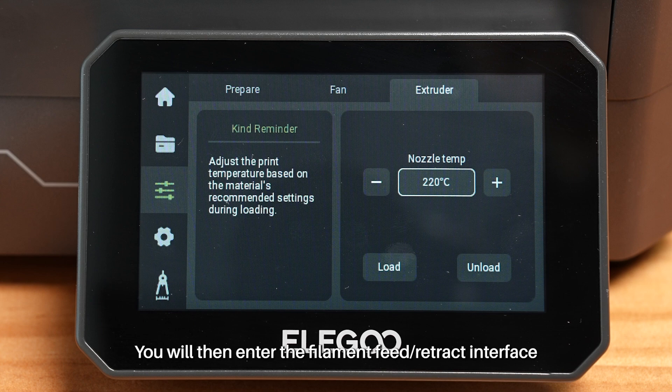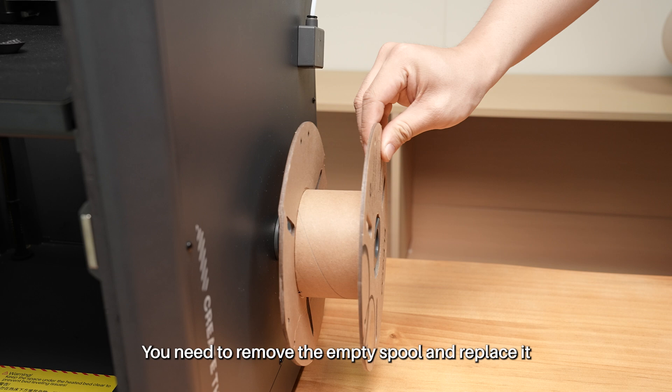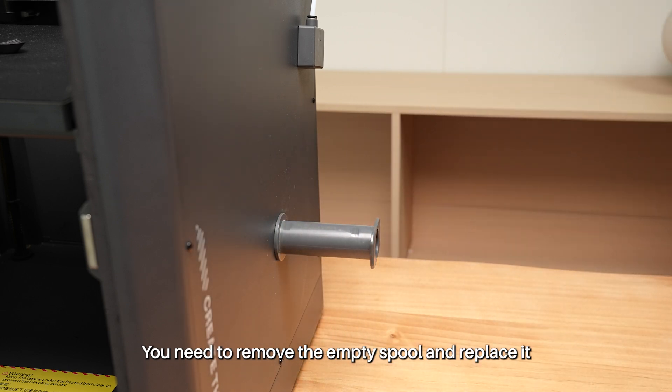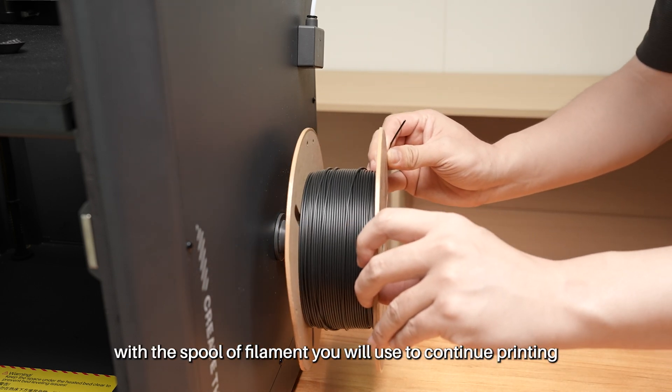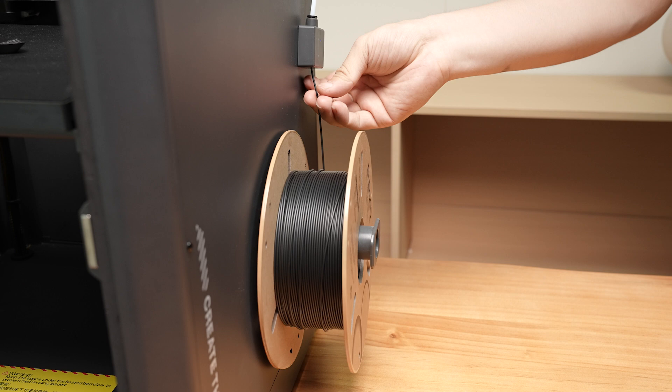You'll then enter the filament feed or retract interface. You'll need to remove the empty spool and replace it with the spool of filament you will use to continue printing.